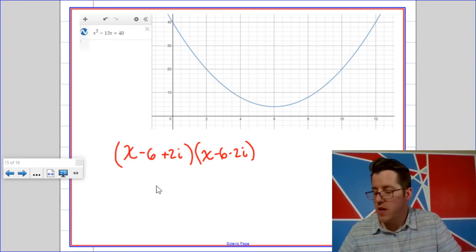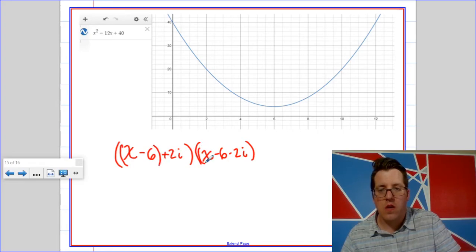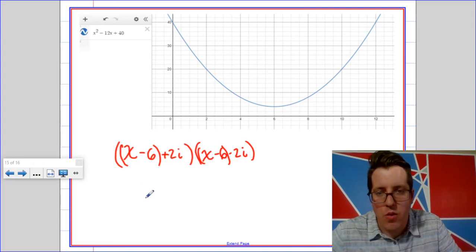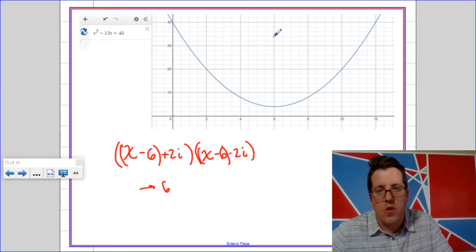But if you look at just the first part that we used to factor, you can think of that like a horizontal translation. You can think of that as shifting your graph six units to the right, which is why our vertex falls right here.